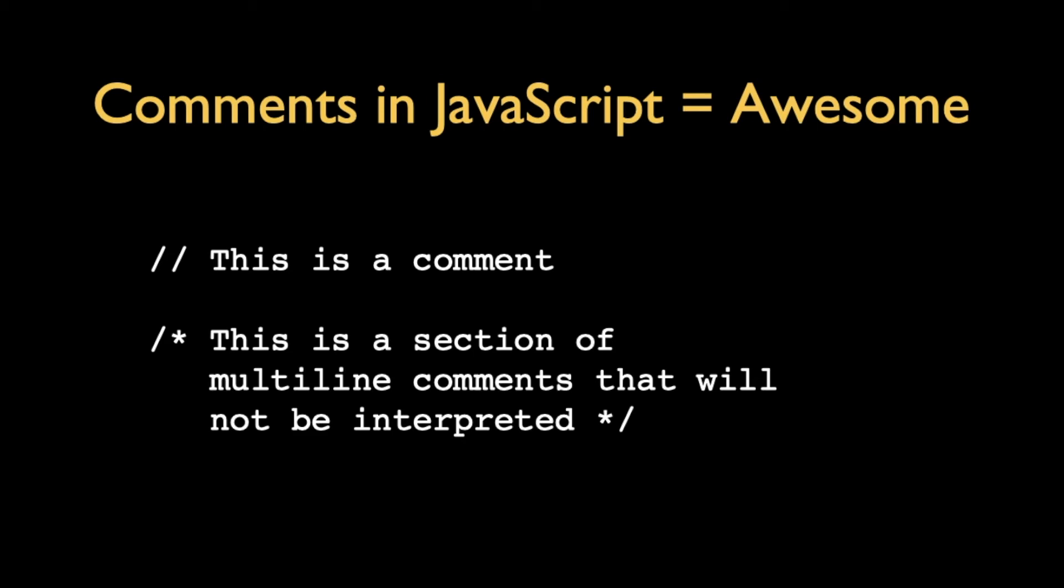The slash star, star slash is a multi-line comment. So this is all comment from here all the way to here. You can have new lines. This is great for writing documentation. That comes from the C language. Java also supports it as well.